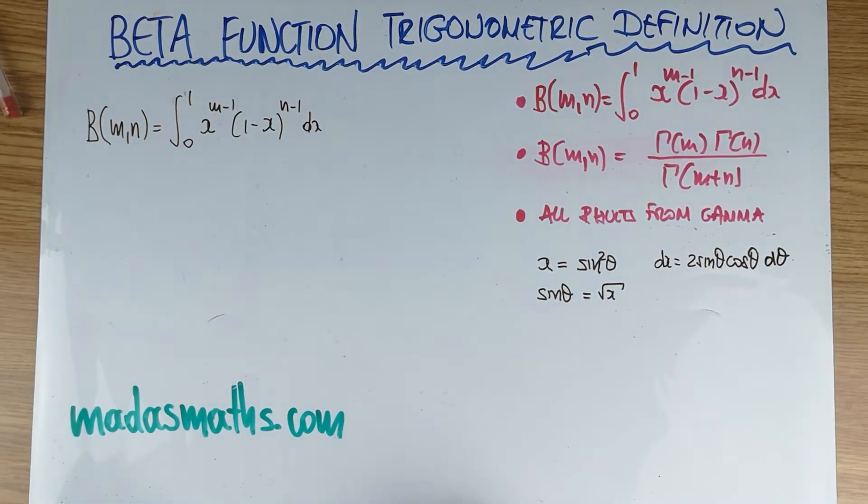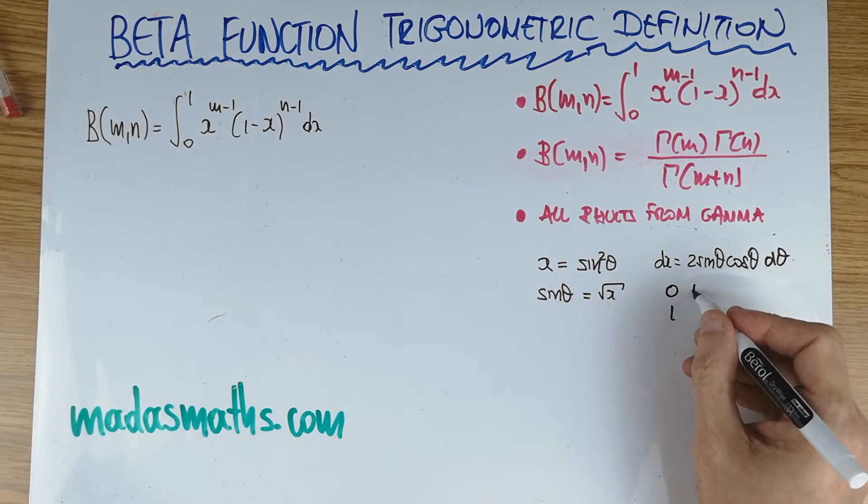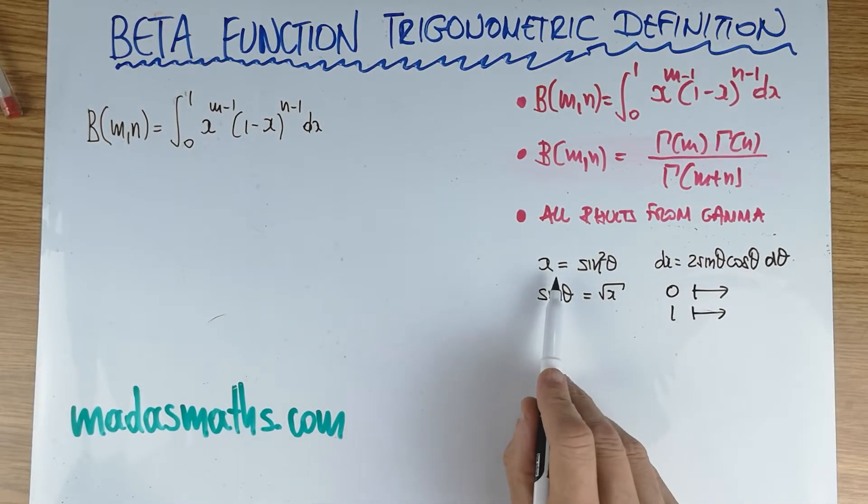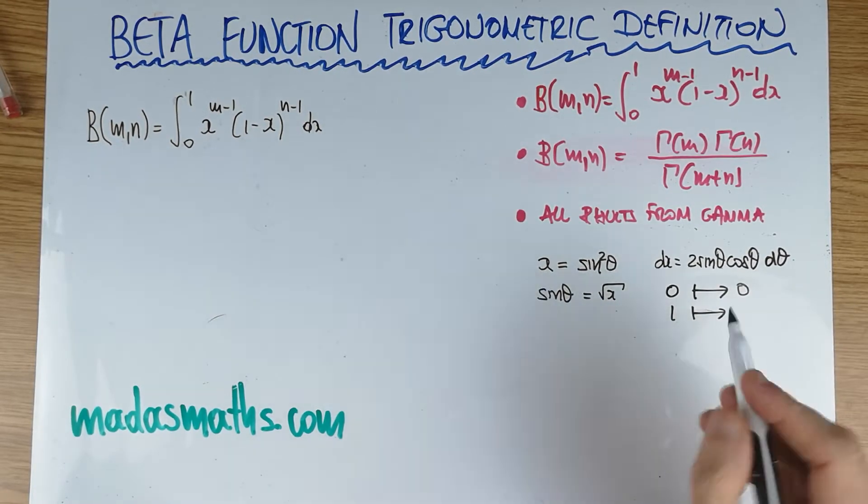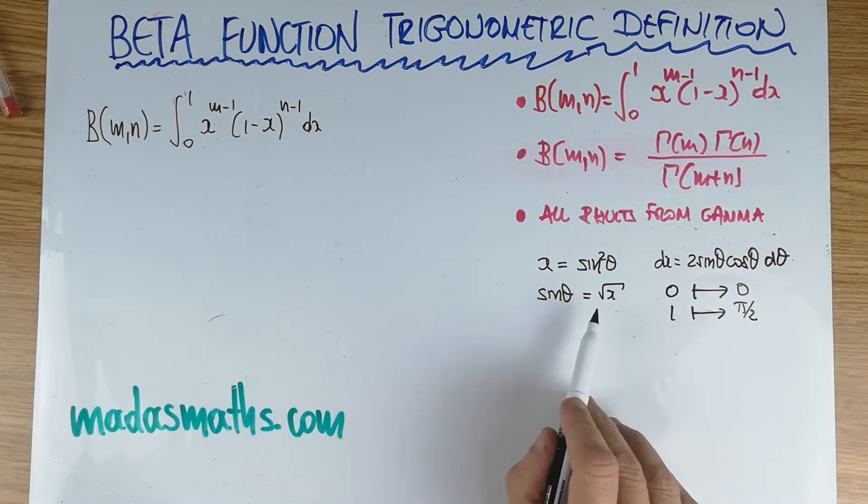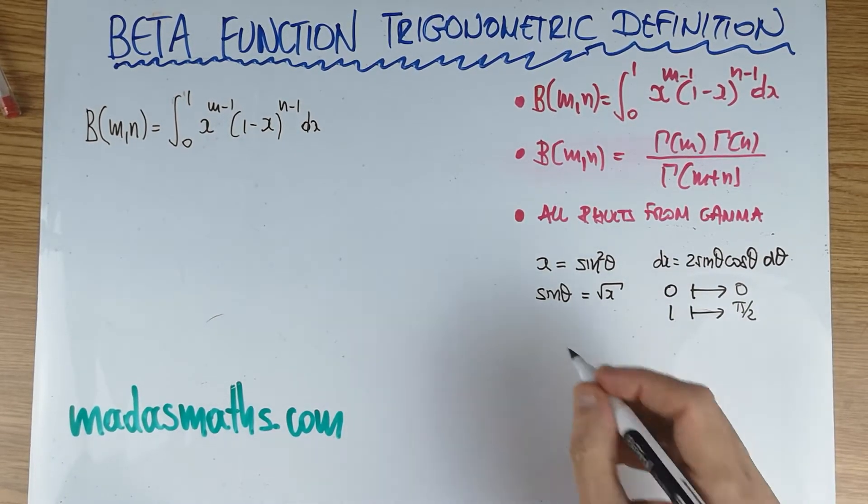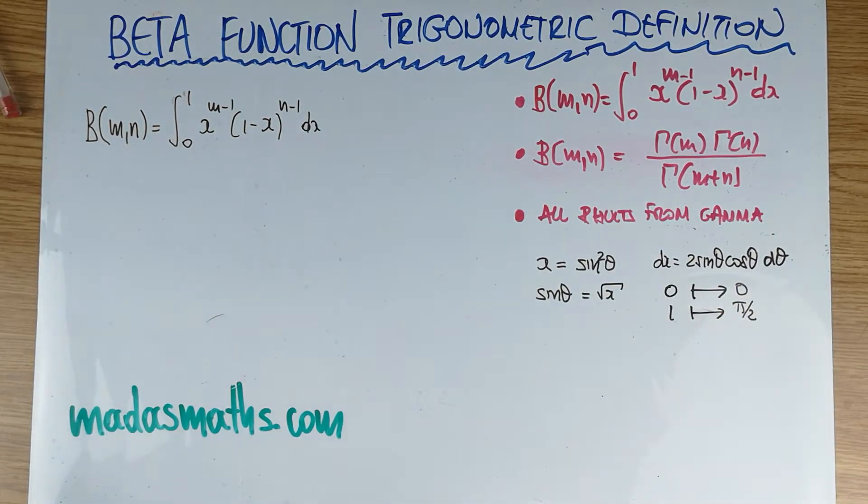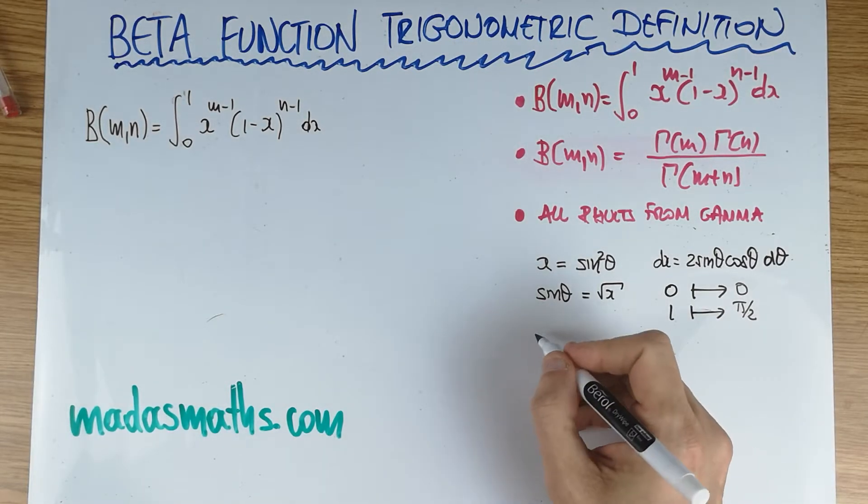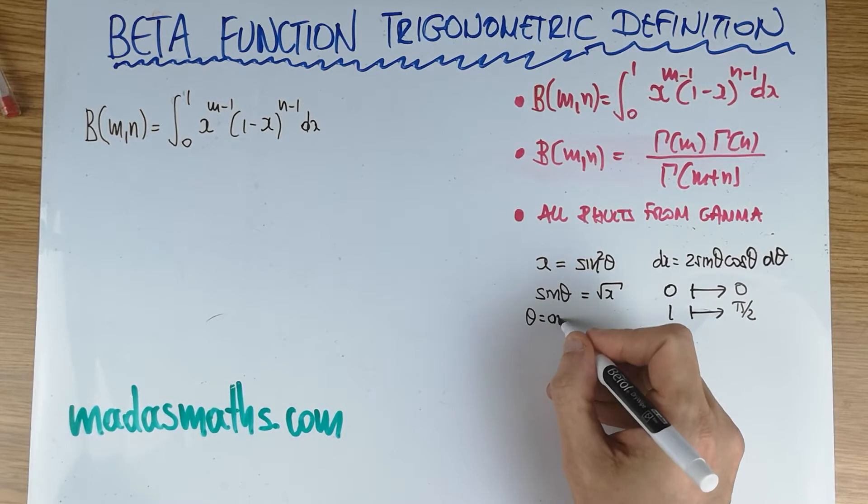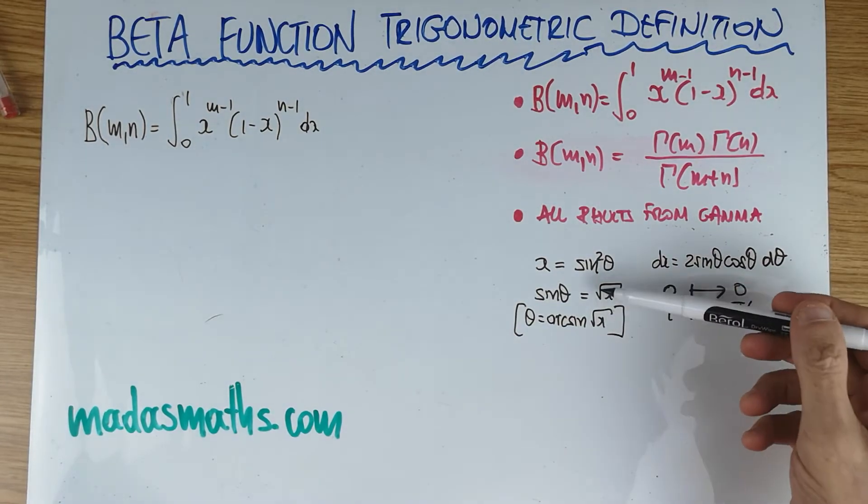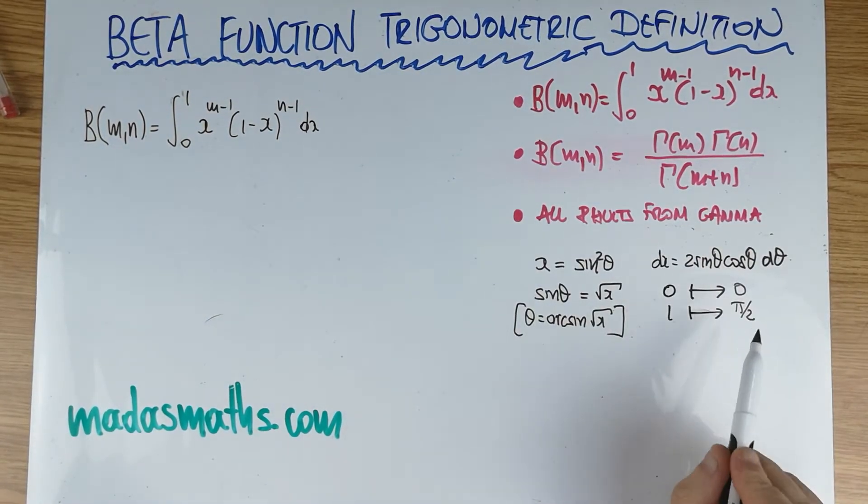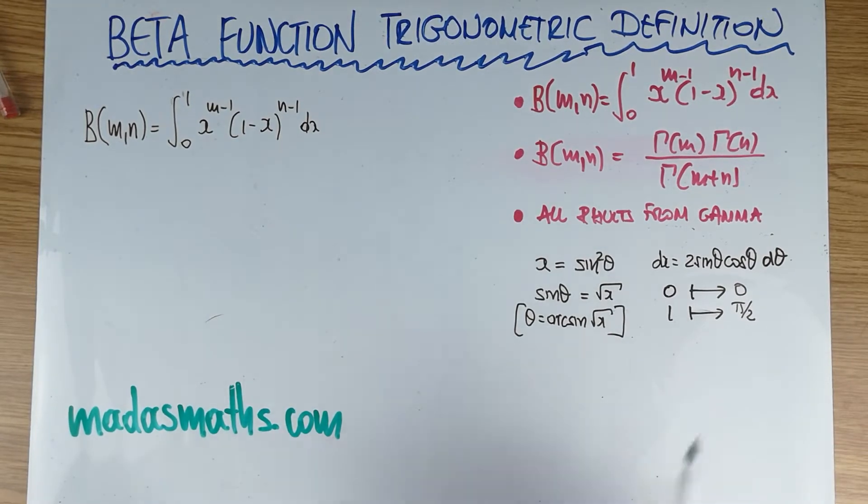We want the limits to map 0 and 1. When x equals 0, theta has to be 0. And to get 1, it has to be pi over 2. The substitution is actually theta equals arcsin of the square root of x. But we want it in that form to substitute. The upper limit is simply pi over 2.